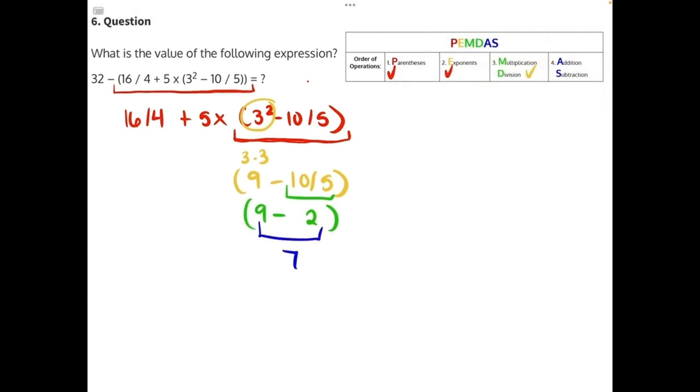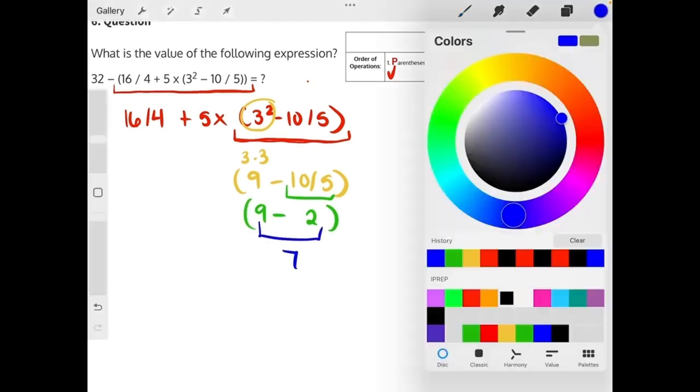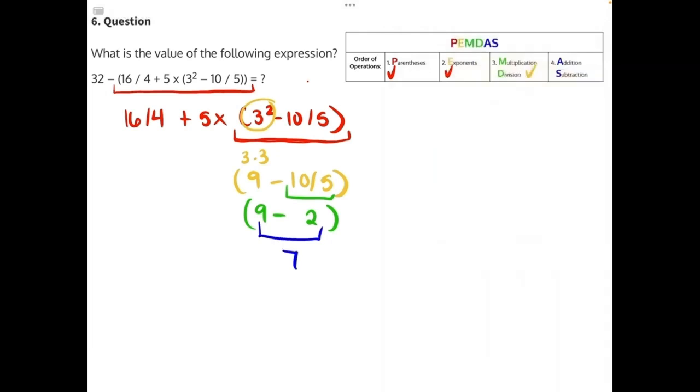So now I can rewrite this entire expression as 16 divided by 4 plus 5 times the value of what was in that parentheses, which was 7.